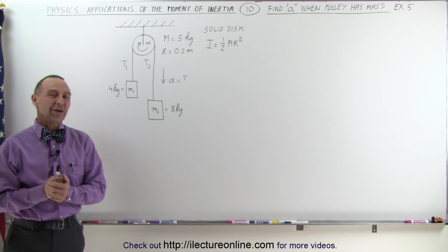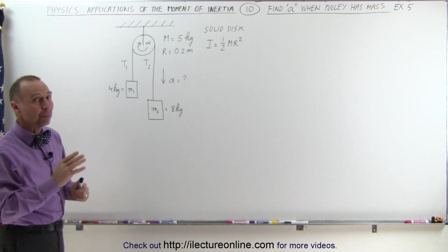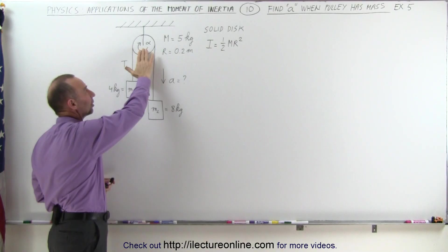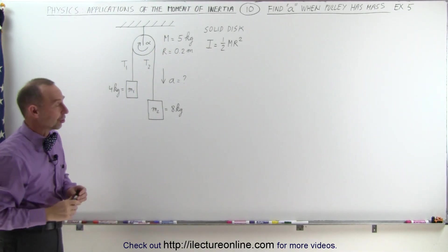Welcome to Electronline. Now we'll try our hand on a problem like this. It's a simple Atwood machine, but instead of what we normally see where we have a pulley that has no mass at all, here we have a pulley that has mass and therefore it has a moment of inertia.